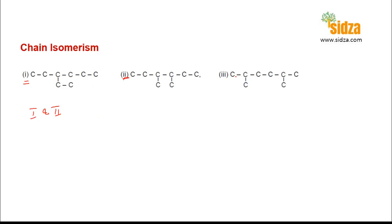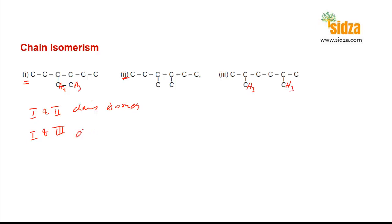Comparing the first molecule with the third, again there are six carbon atoms in the main chain and two different carbon atoms at two different positions. However, in the third molecule the substituent groups are CH2-CH3 versus CH3 and CH3 — the substituent groups are different from those in the first molecule's main chain arrangement. So the first and the third are also chain isomers.